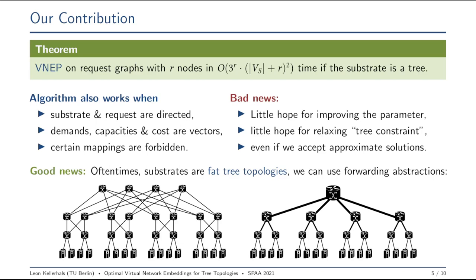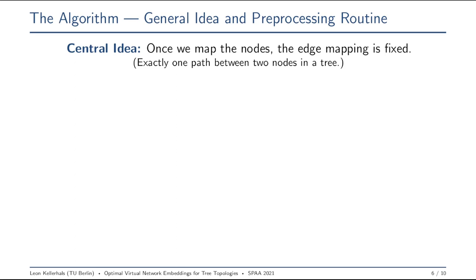Let me tell you how this algorithm works. Again, we are very happy to work with trees because they have one very nice property. Whenever I look at two nodes in a tree, I know that there is exactly a single path between these two nodes. And why is this good news? This is because once we map the nodes onto the substrate graph, we know exactly which edges are going to be used by this mapping. Or even more specifically, whenever I map two adjacent nodes of my request graph onto the substrate, I know exactly along which path their interconnection is going to be.